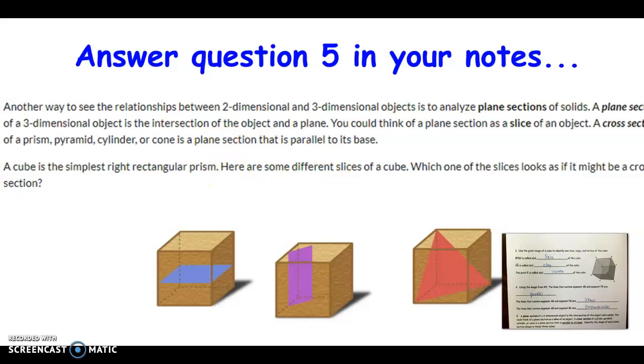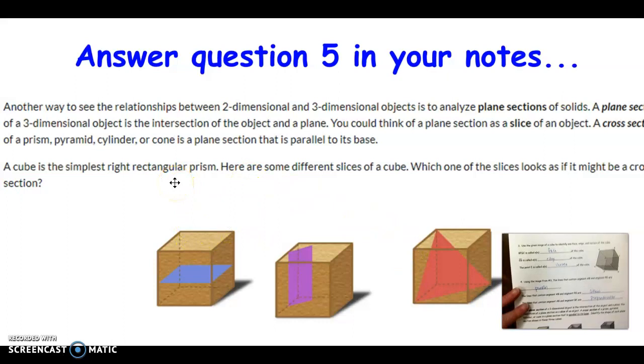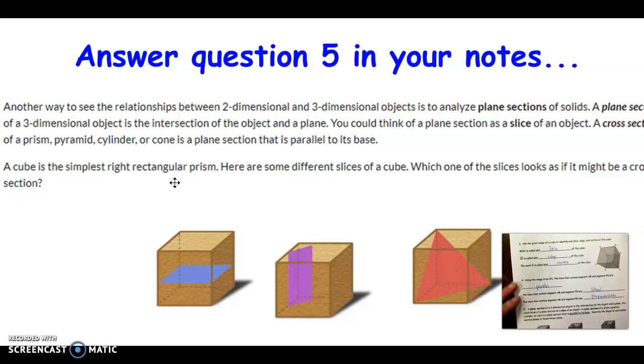Again, a cube is the simplest right rectangular prism, and here are some different slices of a cube. Can you tell which one might be a cross section? I hope you can tell the blue one here, since it's parallel to the base. That would be called a cross section. This purple and this red one would be plane sections. So you can list those on number five. The first one is a cross section. What is the shape of that cross section? Since it's parallel to the base, it's got to be the same shape as the base. So it is a square, just like the base is.